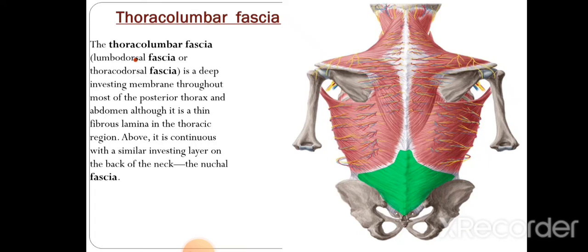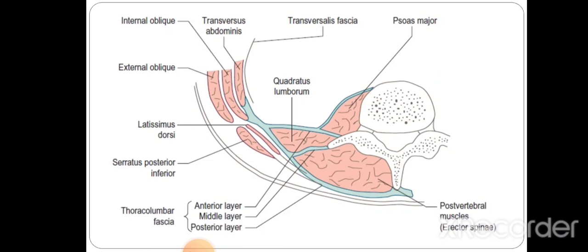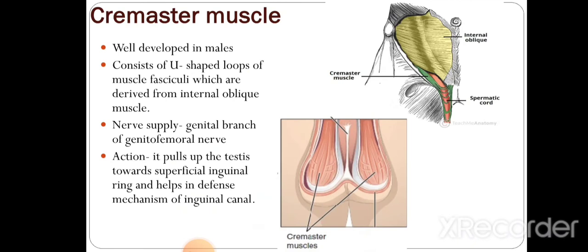The thoracolumbar fascia is a deep investing membrane throughout the posterior part of the thorax and abdomen; above, it is continuous with the nuchal fascia of the neck. It has three layers — anterior, middle, and posterior. The fusion of the anterior and middle layers gives origin to the internal oblique and transversus abdominis muscles.